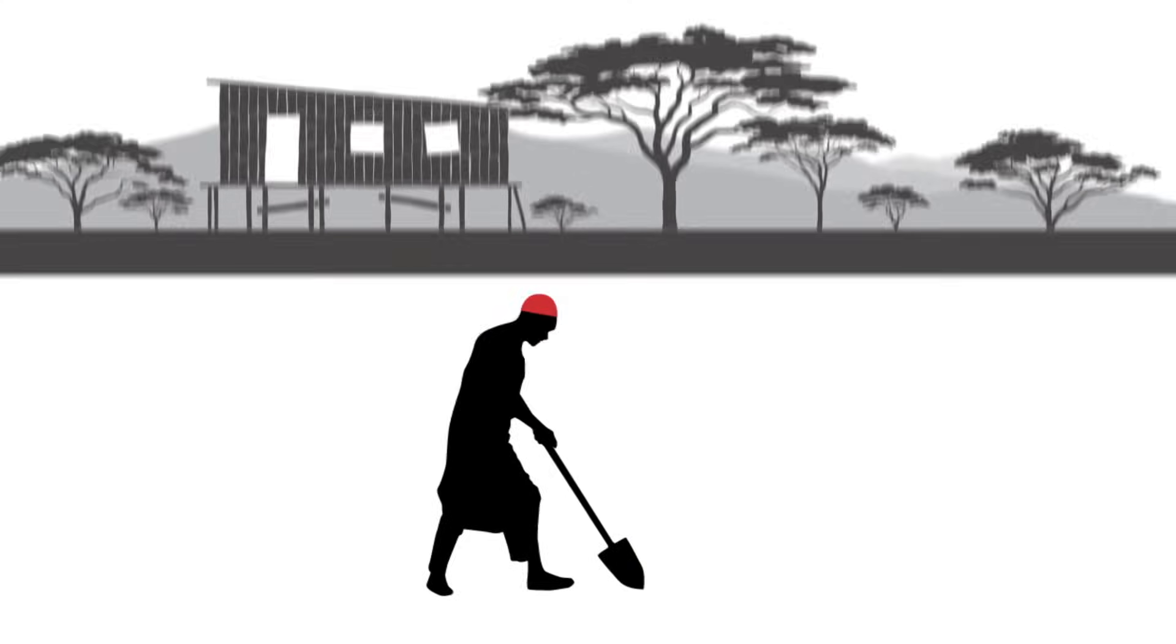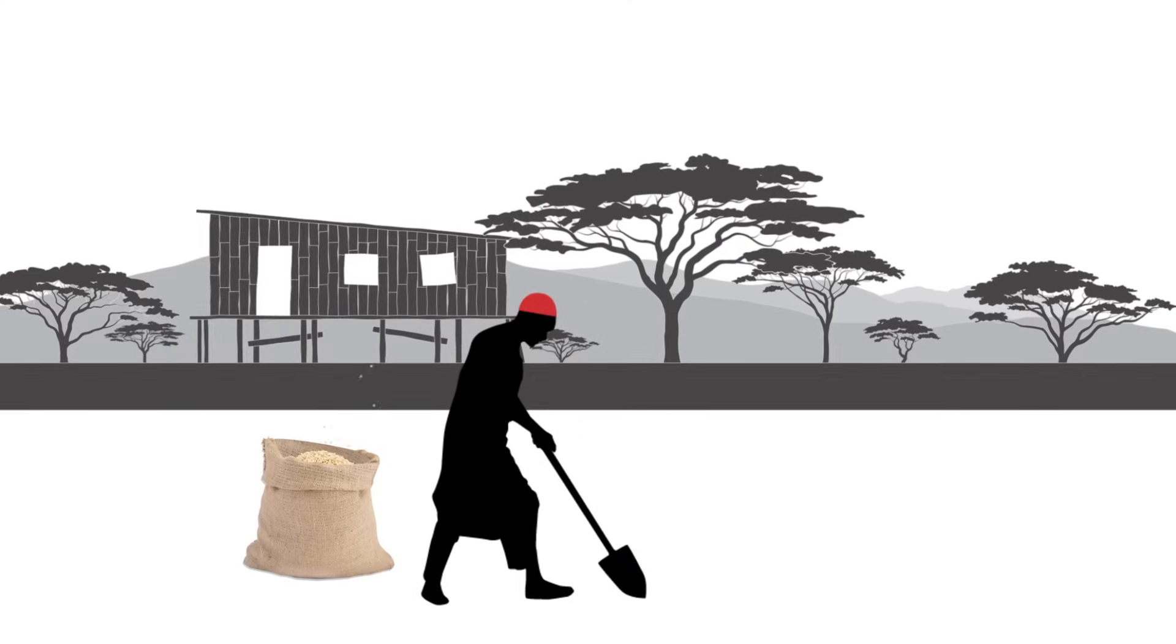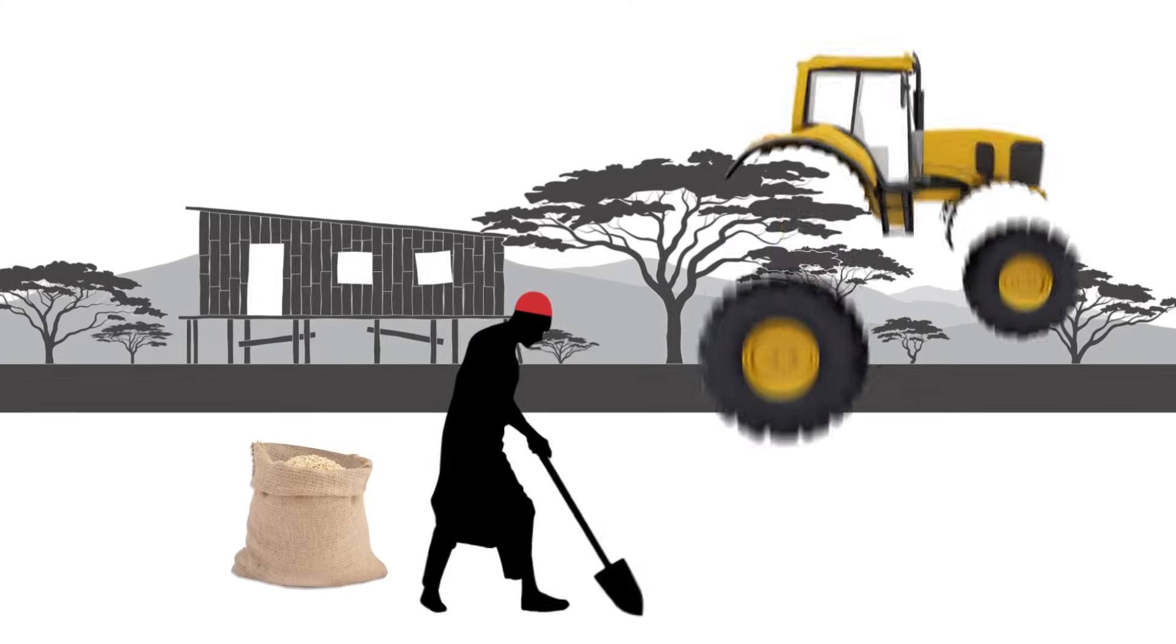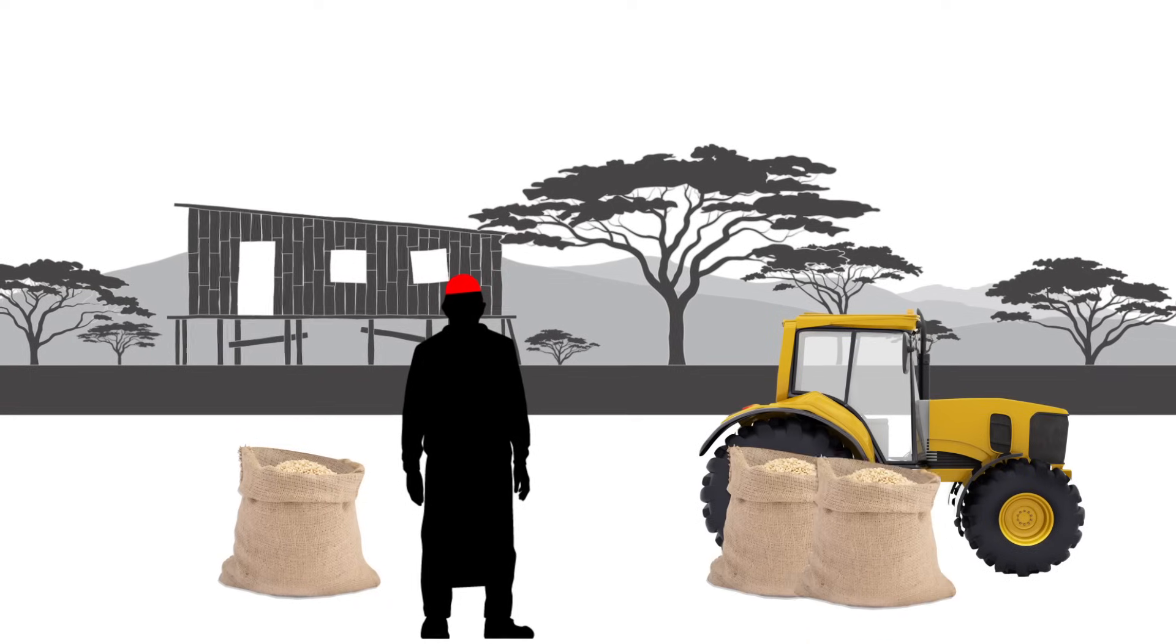What properties should our production function have? First, it makes sense that more K increases output. Recall from our earlier video our farmer. A farmer with a tractor can produce a lot more output than a farmer with just a shovel.